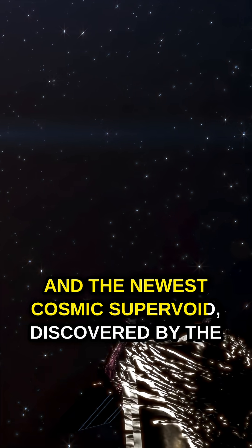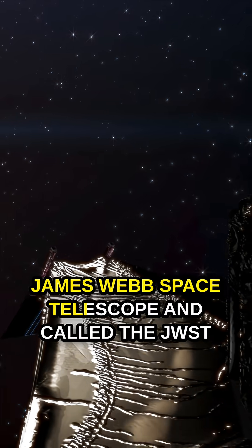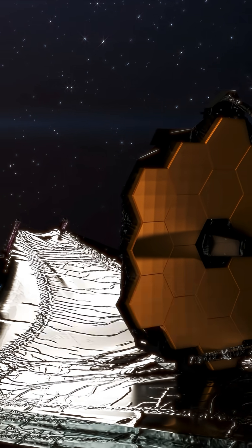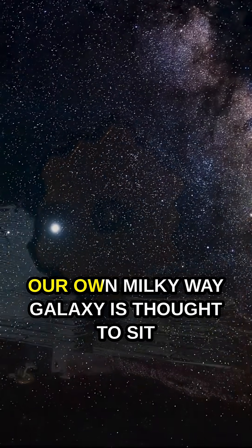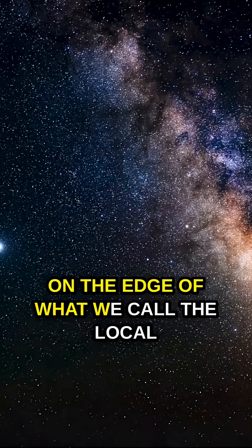And the newest cosmic supervoid discovered by the James Webb Space Telescope, called the JWST Supervoid accordingly, might be even bigger. Our own Milky Way galaxy is thought to sit on the edge of what we call the Local Void.